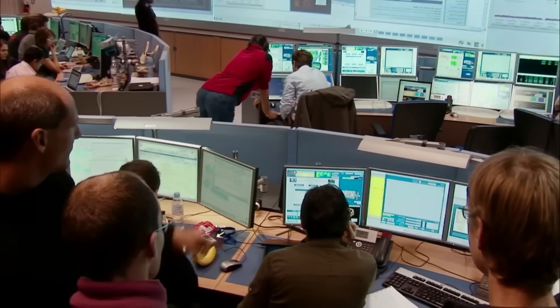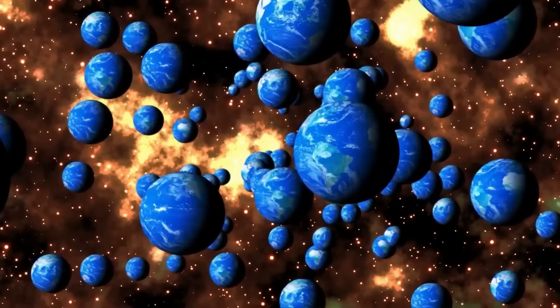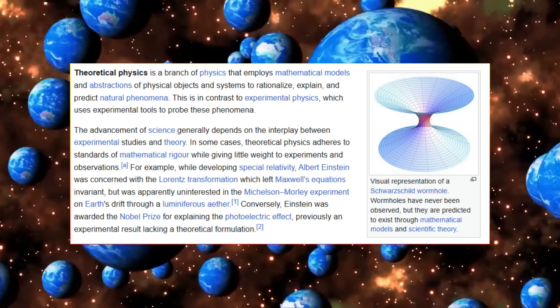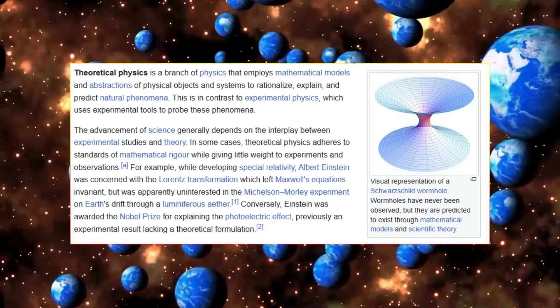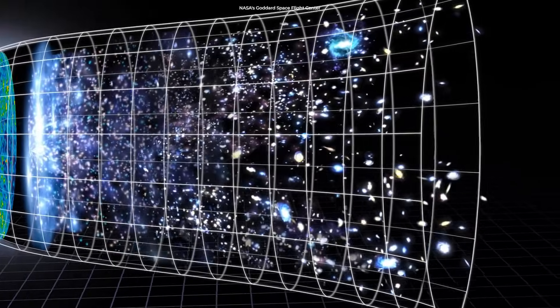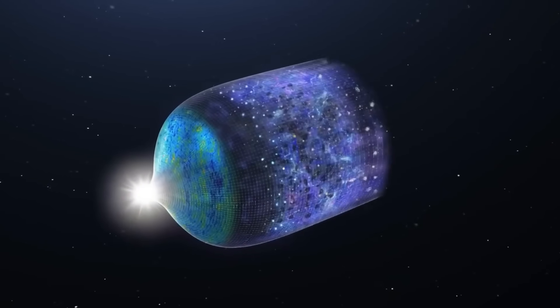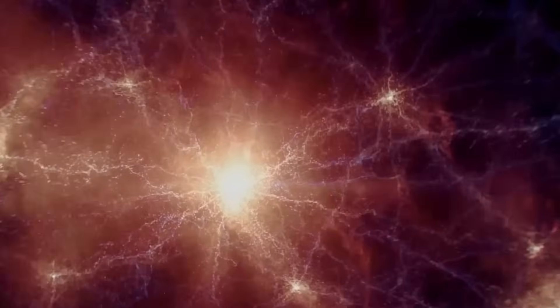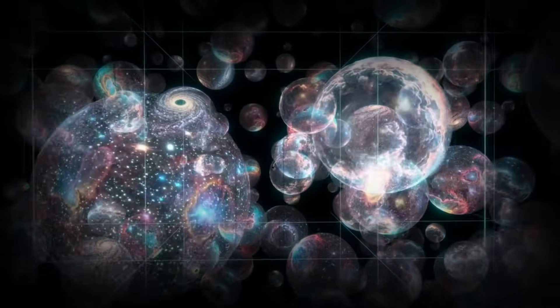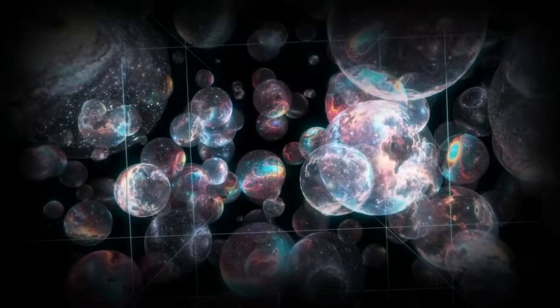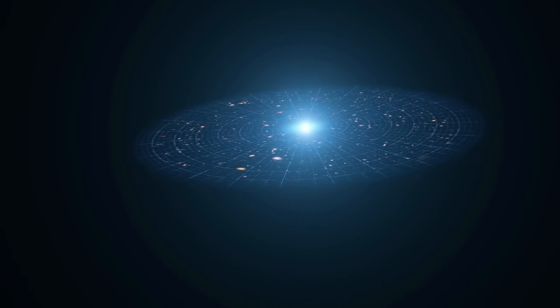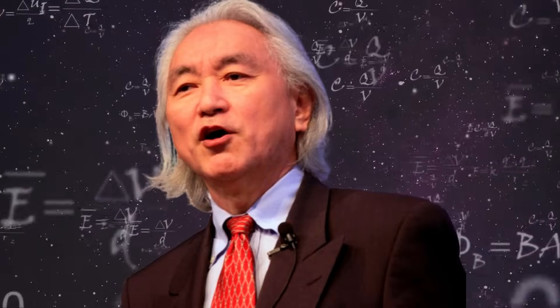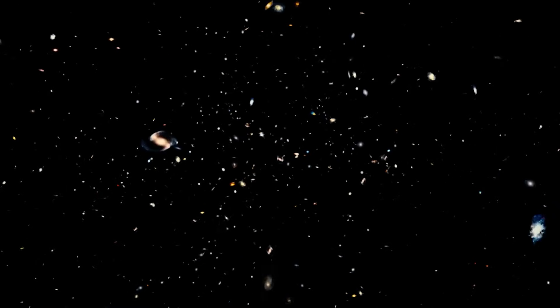As intriguing as Kaku's multiverse theory is, many scientists remain skeptical because there's no direct way to test it. Yet, the multiverse remains in the realm of theoretical physics, and while it could explain the Hubble tension, extraordinary claims require extraordinary evidence. But what if we could actually prove it? What if there were a way to detect the influence of parallel universes? So if Hubble tension is real, and Kaku's theory holds, how can we actually prove the multiverse?